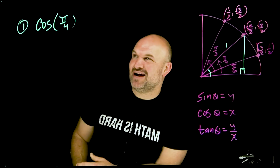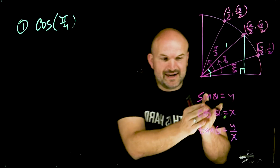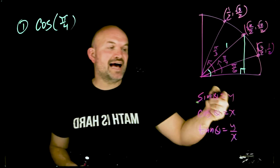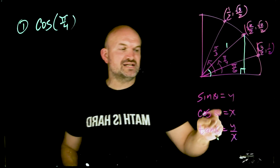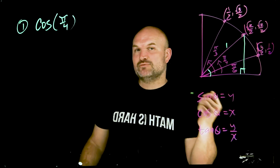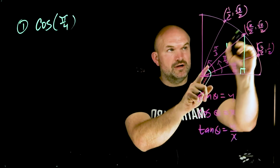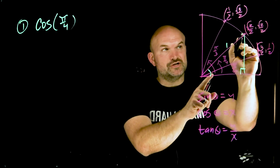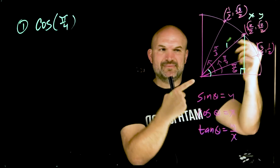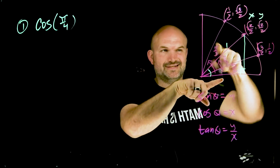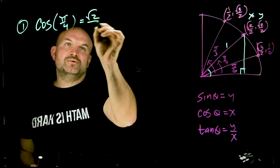This first example is cosine of π/4. Cosine of an angle represents the x-coordinate of the point on the unit circle. So we go to π/4 in the first quadrant, look at the coordinate point, and see that √2/2 is our x-coordinate — which makes sense as adjacent over hypotenuse, and since the hypotenuse is 1, it's just √2/2.